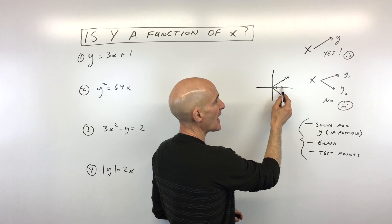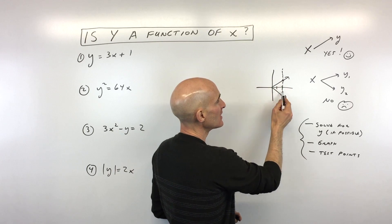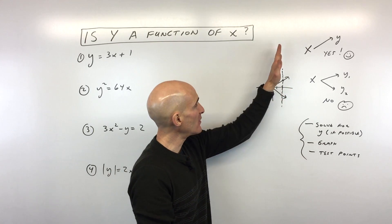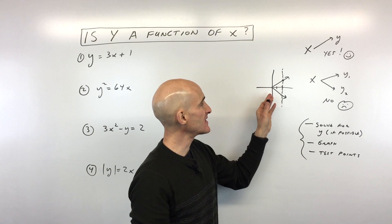So for that given input of x equals 2, I'm actually getting two different y values and it's failing that vertical line test. So y is not a function of x.